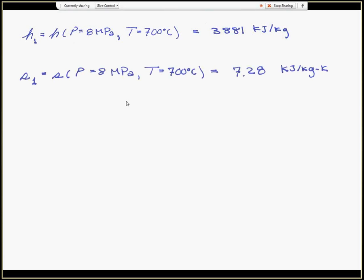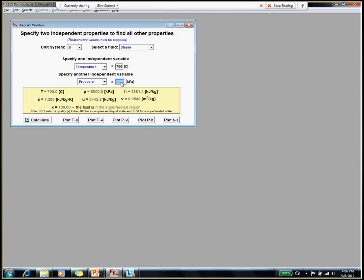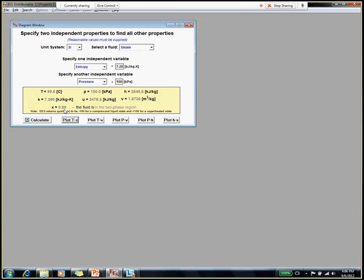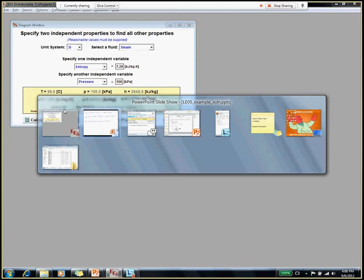While I was there, I also looked up S1. And this is the information that I am going to use to find the state point H2s. So at state point 2s, I know the exit pressure, 100 kPa. I know the entropy is the same as that at the inlet, 7.28 kJ per kg K. That should give me 2646 kJ per kg. Let's make sure that that's the case. So the pressure at the exit, 100 kPa. Entropy at the exit of the ideal turbine, 7.28. Let's calculate that. There's my enthalpy, 2645.6 kJ per kg. And I plot that and see that in fact state point 2s is underneath the vapor dome. It is a saturated mixture. There's the quality right there, 0.99. Just barely a saturated mixture, but a saturated mixture nonetheless. That's how I find H2s.